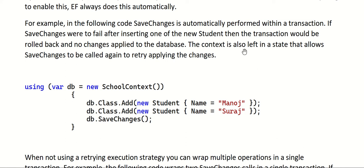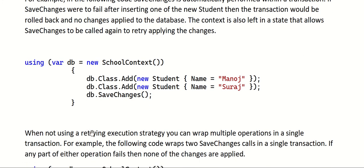The context is also left in a state that allows SaveChanges to be called again to retry applying the changes. So before applying changes your DbContext will be in that prior state, and once the connection is re-established by the retry mechanism it will try to insert those records once again.